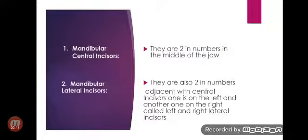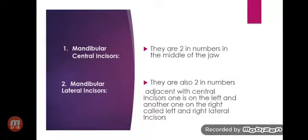The mandibular incisors are further divided into two subgroups: namely, mandibular central incisors, which are two in number and are located in the middle of the jaw; and mandibular lateral incisors, which are also two in number, adjacent to the central incisors — one on the left and one on the right, called left and right lateral incisors.